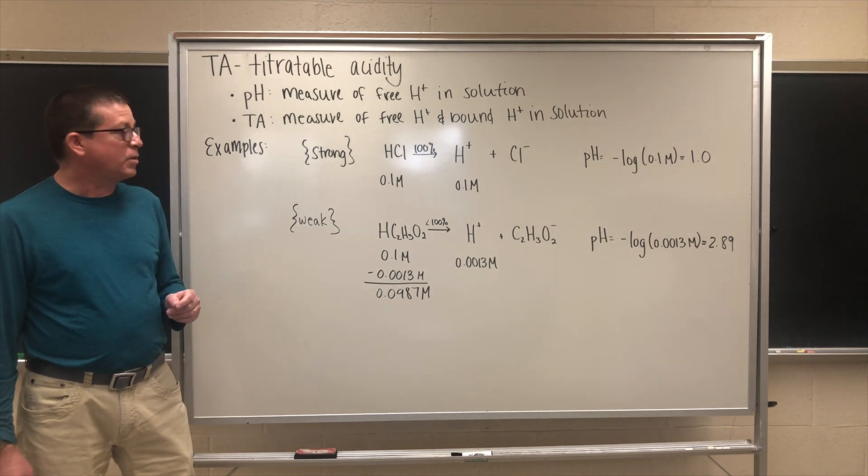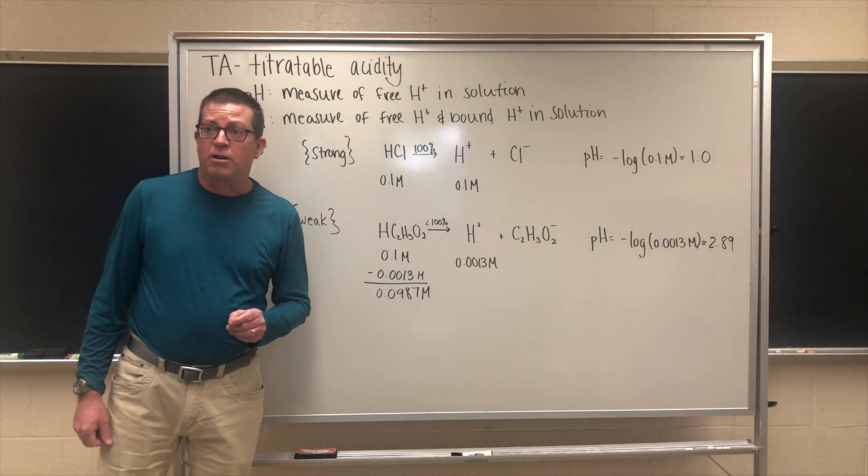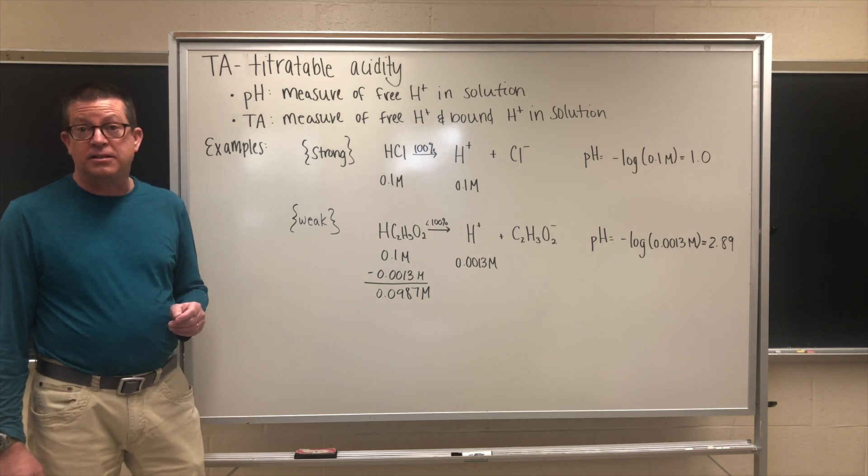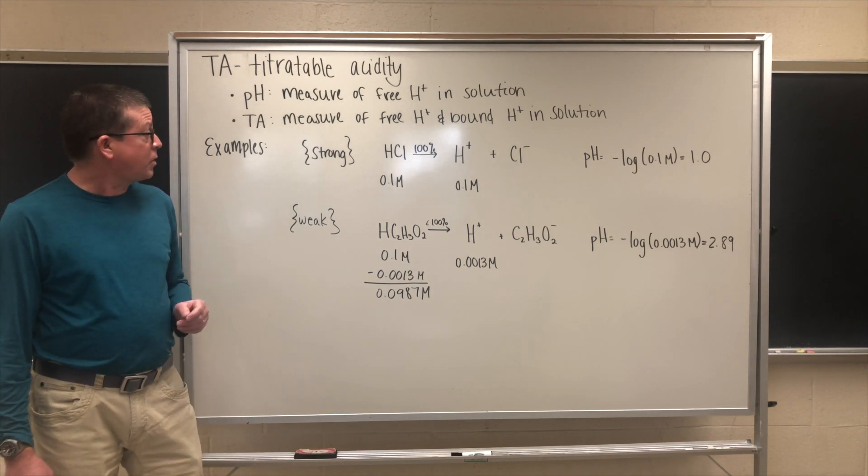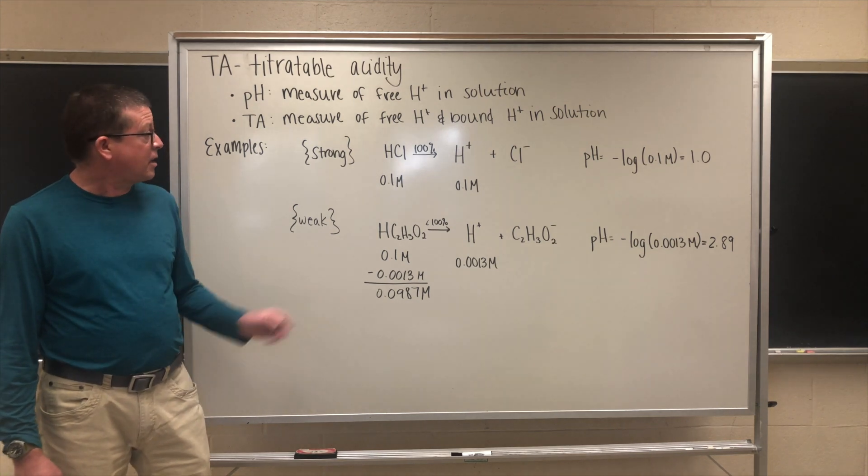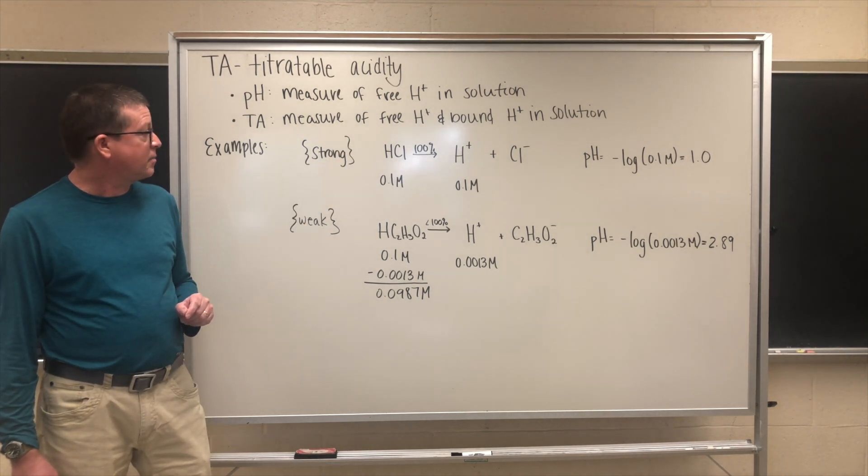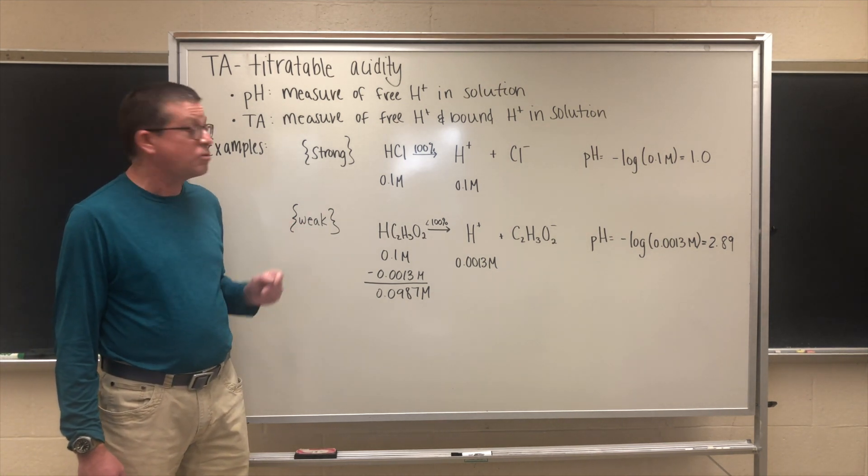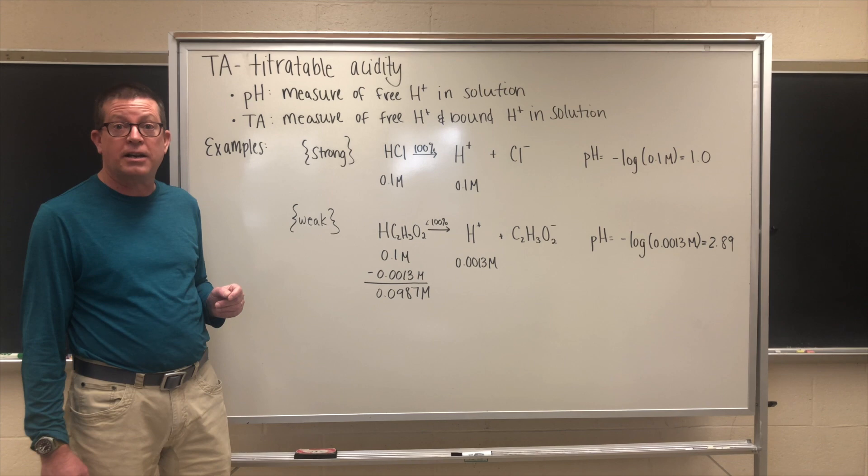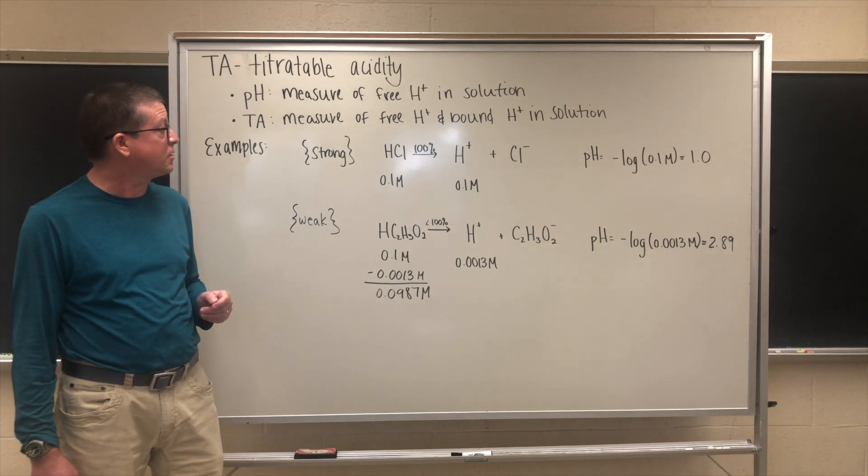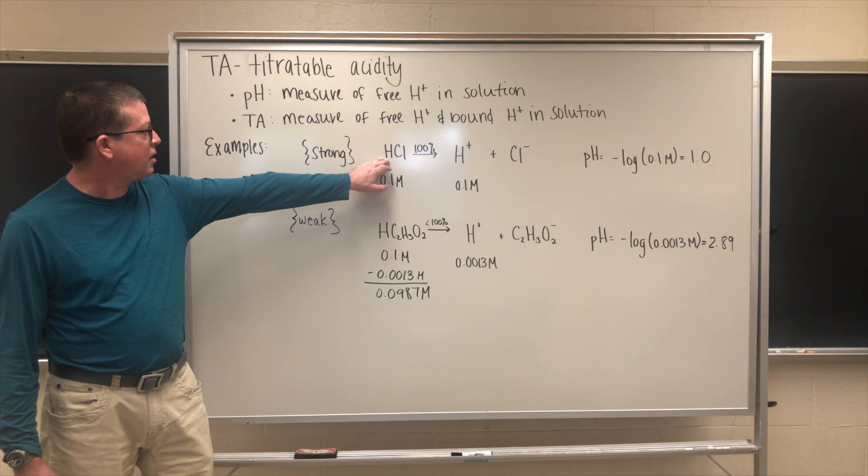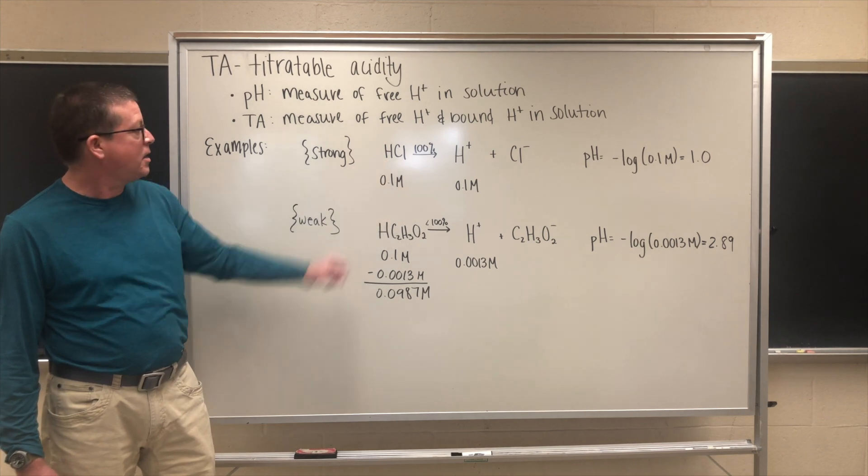I want to give you a quick example. In a past video we talked about the differences between weak and strong acids. Let's start by looking at a strong acid. A good example is hydrochloric acid. By definition, a strong acid dissociates or comes apart into its component ions 100% in solution. So for every one molecule of HCl I have, I'm going to make one ion of hydrogen and one ion of chloride.